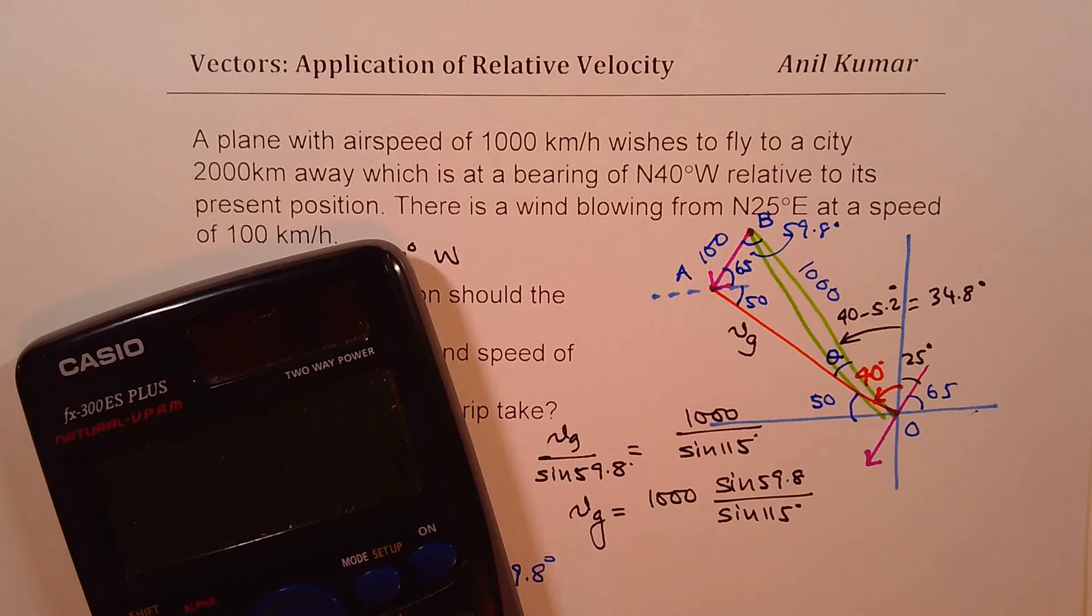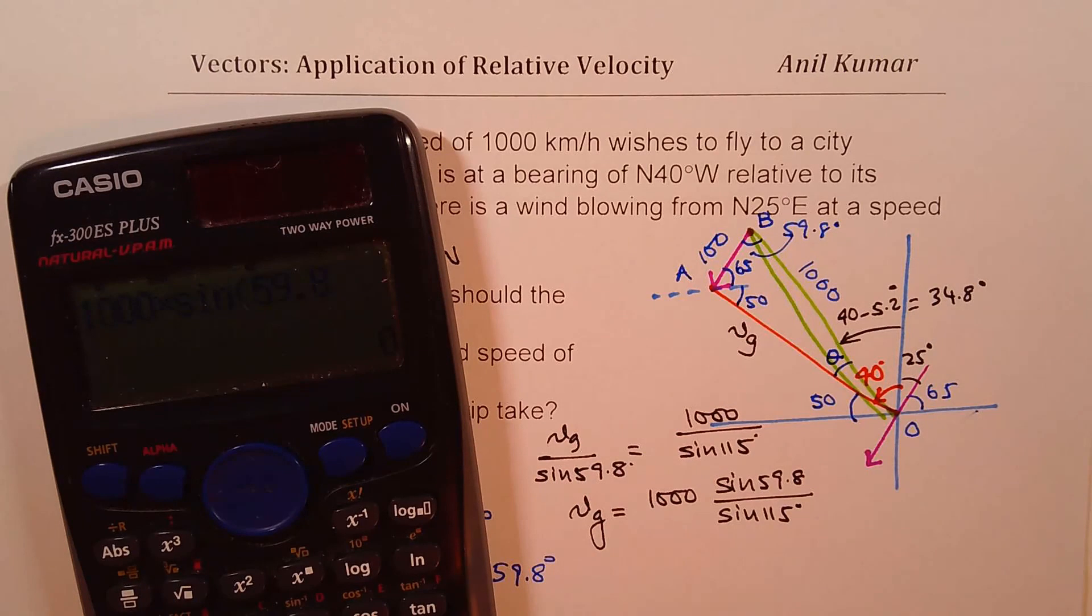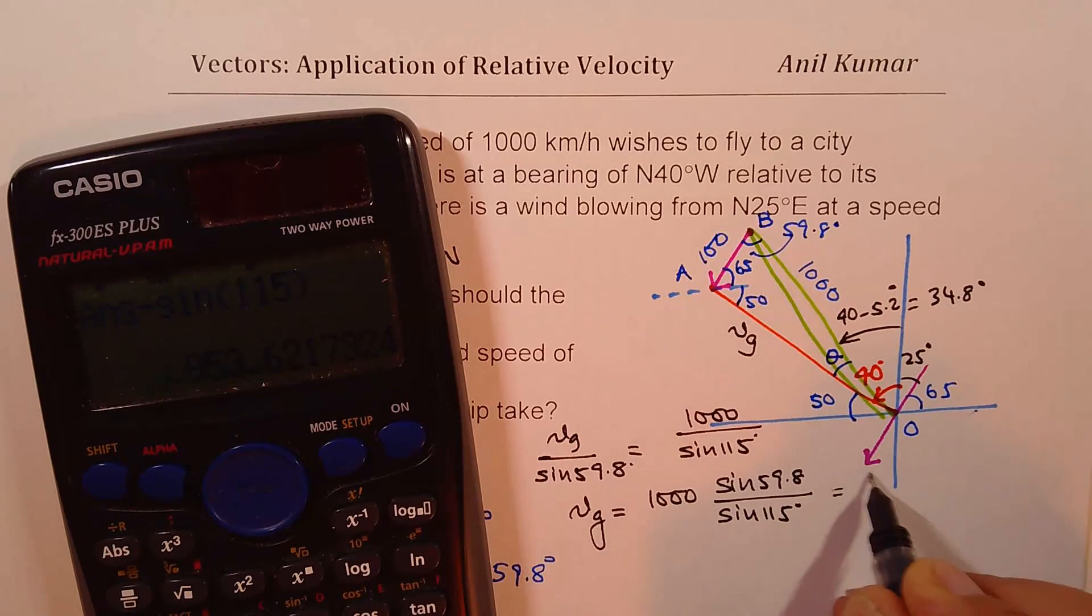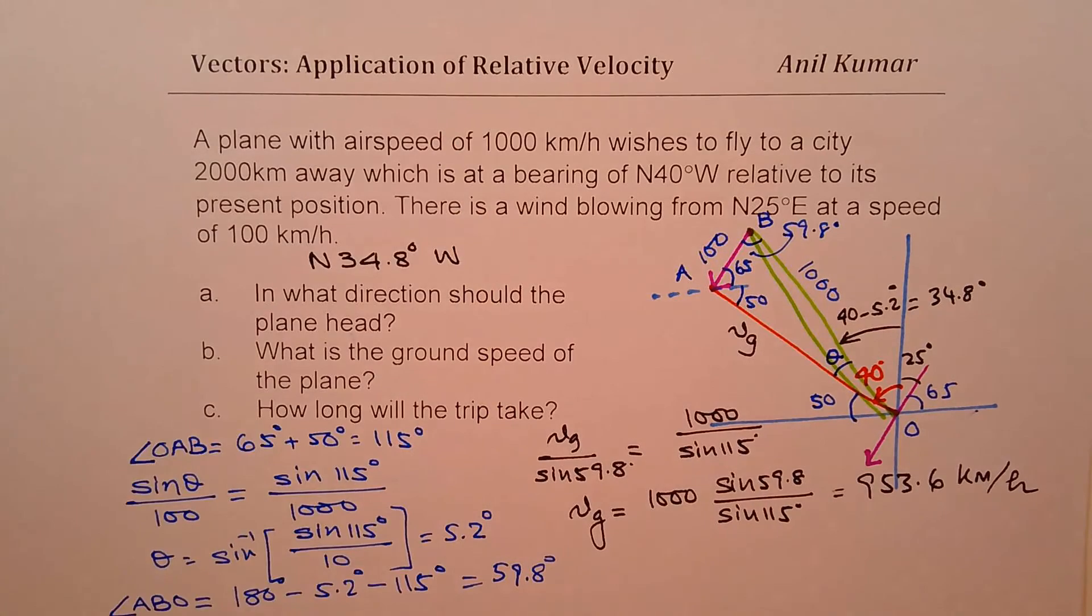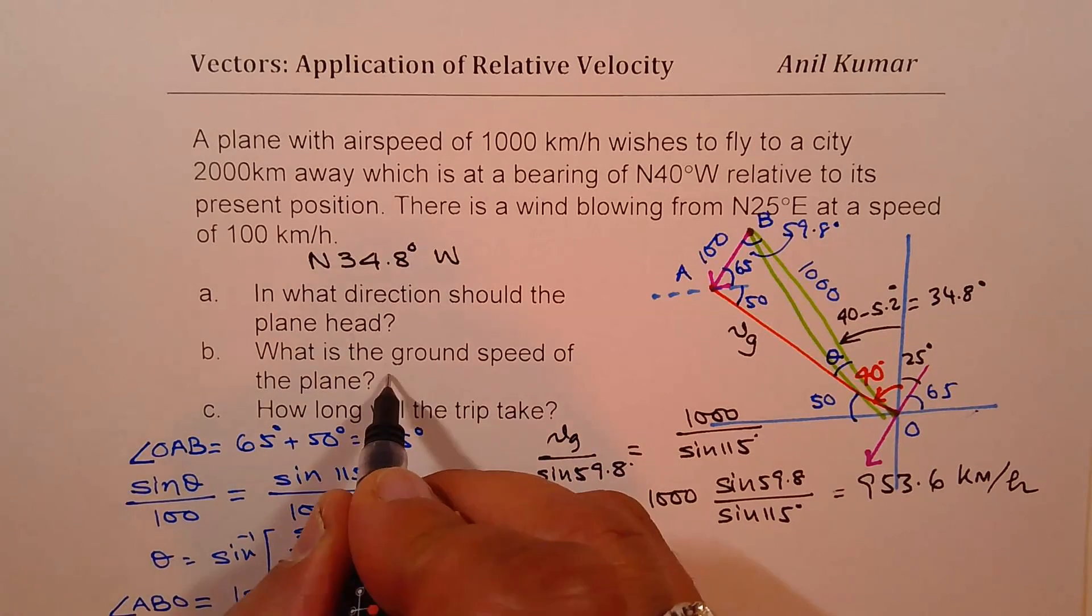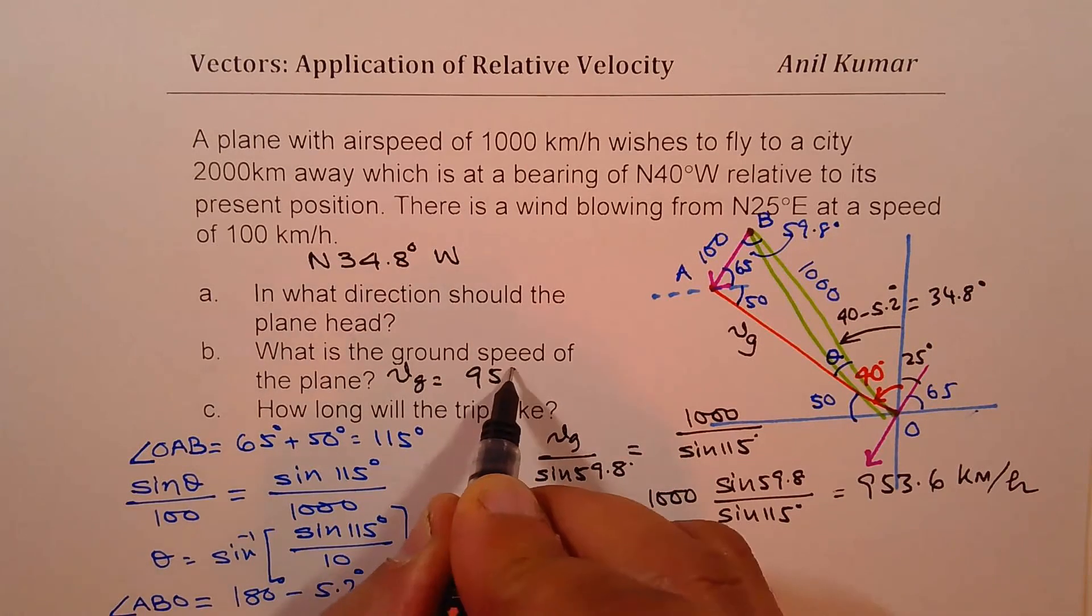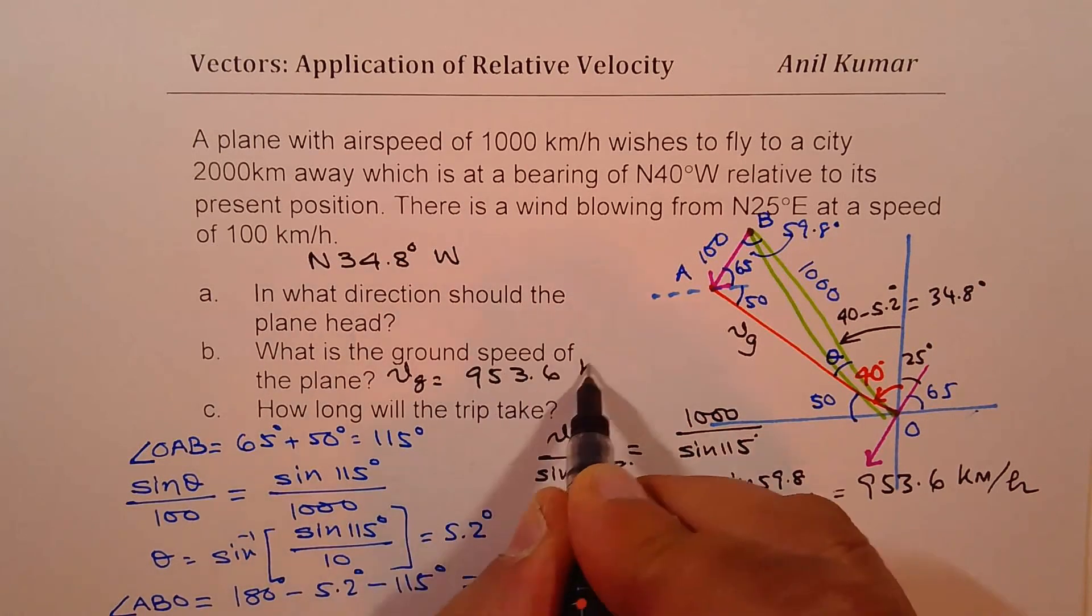So we get 1000 times sine of 59.8, and we'll divide this by sine of 115 degrees. And that is equal to 953.6 kilometers per hour. So that is VG. Now the question here is, what is the ground velocity? Let's write down. Ground velocity is the resultant velocity, 953.6 kilometers per hour.